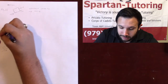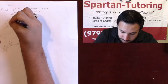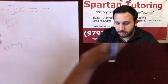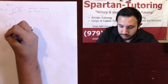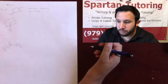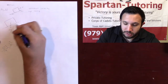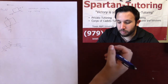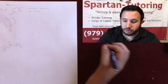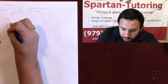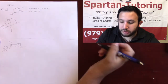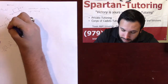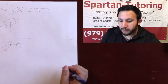Let's set up the free body diagram for the ramp problem. Going through the checklist: gravity is straight down. The normal force is perpendicular to the ramp surface, so it points away from the ramp at an angle. Friction opposes motion — since the block is being pulled up, friction mu times N points down the ramp. And there's the external force F going up the ramp.